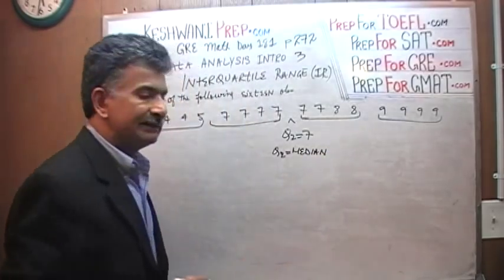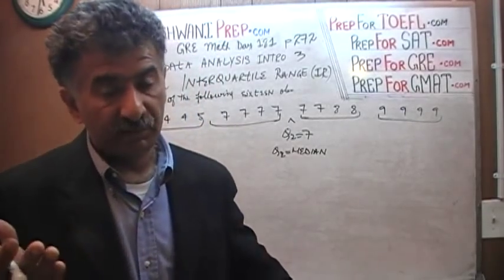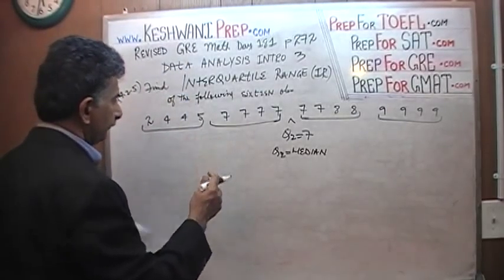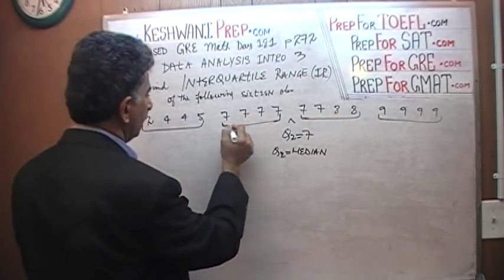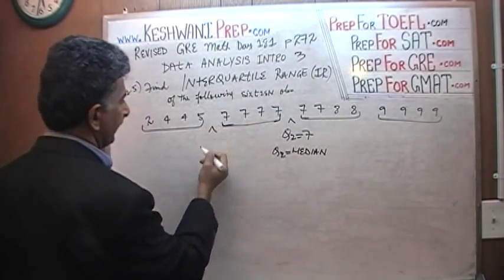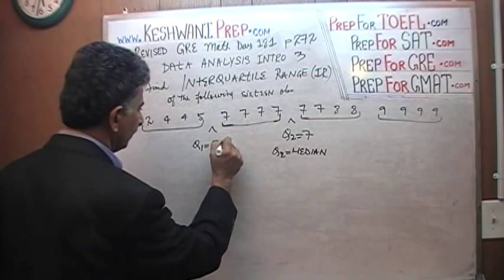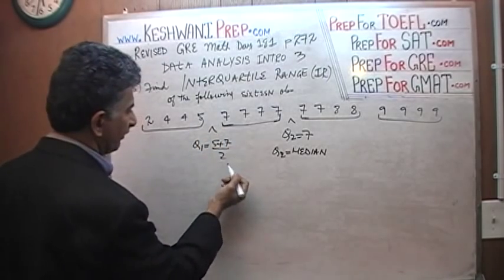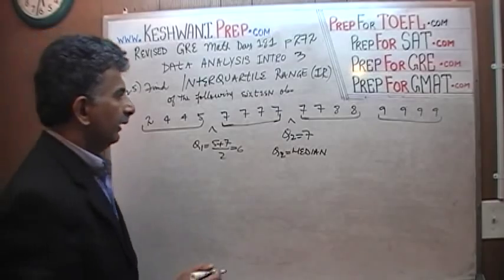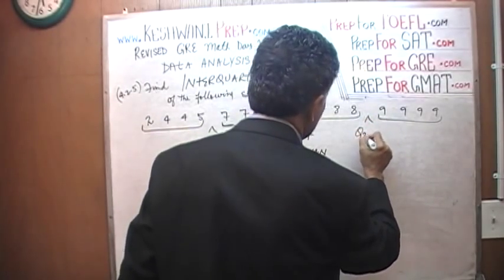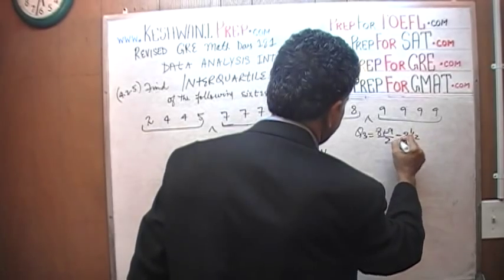The second quartile tells you that 50% of the population is below it and 50% is above it — that is the definition of median. For the first quartile, we take the average of the 4th and 5th observations, which are 5 and 7. The average is 6, so Q1 equals 6. The third quartile is the average of the 12th and 13th observations, which are 8 and 9. That gives us 8.5 for Q3.